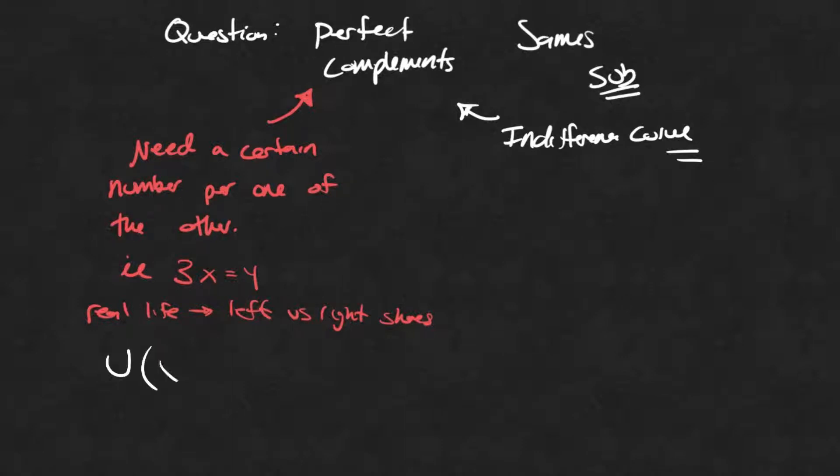And so what that means is when I'm looking at exactly what this utility function is, my utility of X and Y, if X is left shoes and Y is right shoes, it's just going to be the minimum of L, R. Or this would be the minimum of X, Y.